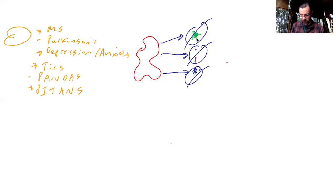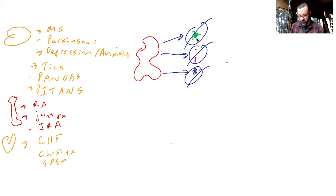Now say you attack joint tissue. You get RA from that, rheumatoid arthritis. You can get just joint pain in general, you can get juvenile rheumatoid arthritis from that. What if it attacks the heart? You can get congestive heart failure from that, you can get chest pain from that, you can get edema.